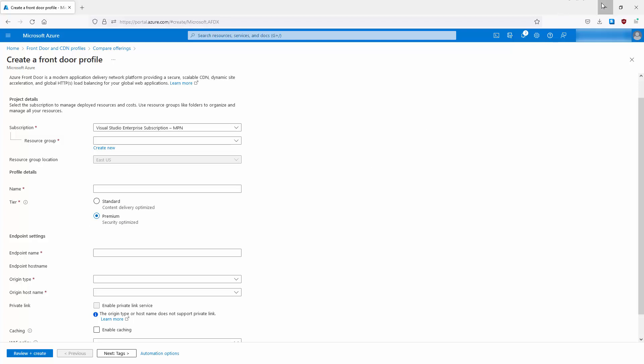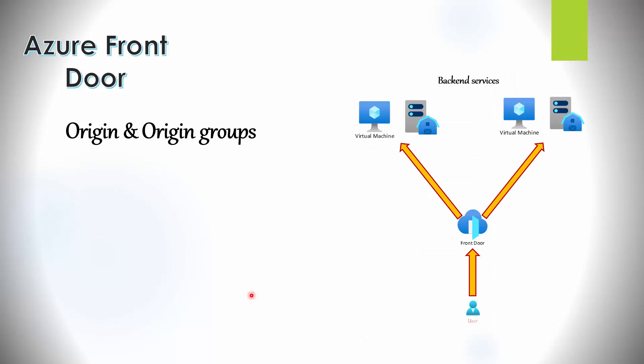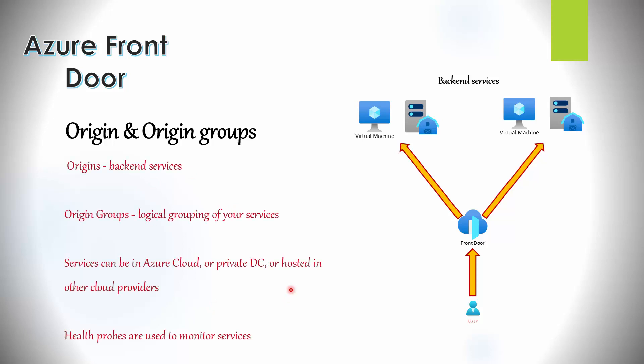Next we'll look at origins. An origin can be seen as the back-end application service, and an origin group is a group or set of origins. An origin is the actual back-end service itself, such as an application service. An origin group groups these services together, and the origin group can be associated with a route to determine how traffic will reach the origins — in other words, how traffic reaches your services.